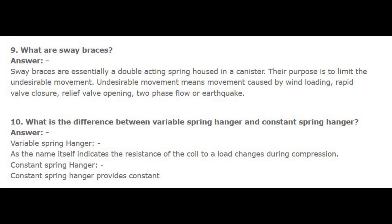Number 10. What is the difference between variable spring hanger and constant spring hanger? Answer: Variable spring hanger — as the name itself indicates, the resistance of the coil to a load changes during compression. Constant spring hanger — a constant spring hanger provides constant support load.